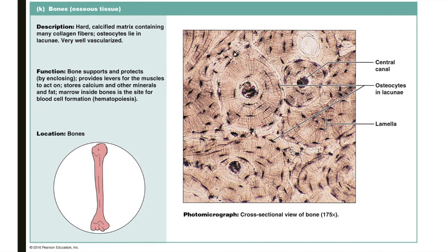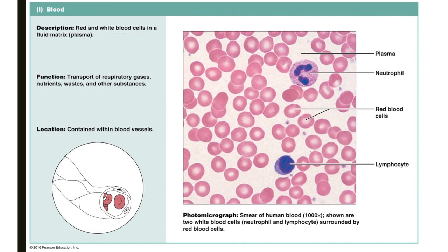Bone, or osseous connective tissue, is made up of a hard, calcified matrix containing many collagen fibers. Like chondrocytes found within cartilage, osseous tissue houses its own specialized regulatory cells called osteocytes, derived from osseous-forming osteoblasts. Like chondrocytes, osteocytes are also isolated within lacuna. Osseous tissue is very well vascularized, receiving an ample blood supply. When viewing a cross-section of bone under the microscope, you'll see a large central canal containing a network of blood vessels, surrounded by lamella — layers of compact matrix. Blood is the final connective tissue, comprised of red and white blood cells with a fluid matrix called plasma, which sets it apart from other connective tissue types.